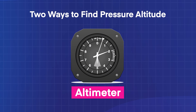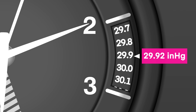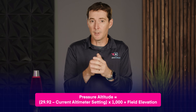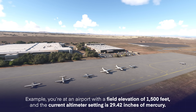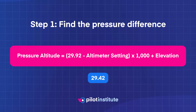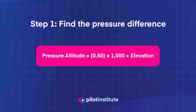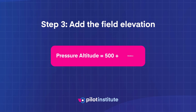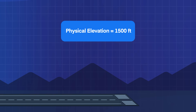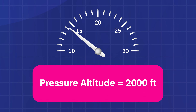So before you can figure out how much runway you'll need and how quickly you can climb, you first need to find your pressure altitude. There are two ways to get it: in the cockpit, set the altimeter to 29.92 and read the altitude. For preflight performance planning, you can calculate it manually using this formula: take the airport's elevation and the current altimeter setting. For example, at an airport with a field elevation of 1,500 feet and an altimeter setting of 29.42, subtract 29.42 from 29.92, multiply by 1,000, then add the field elevation. The lower-than-standard pressure increases your pressure altitude to 2,000 feet.